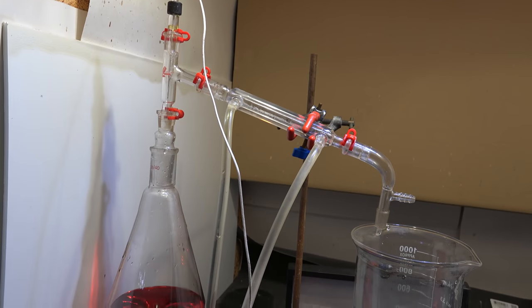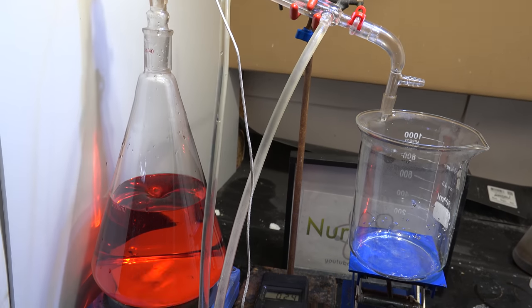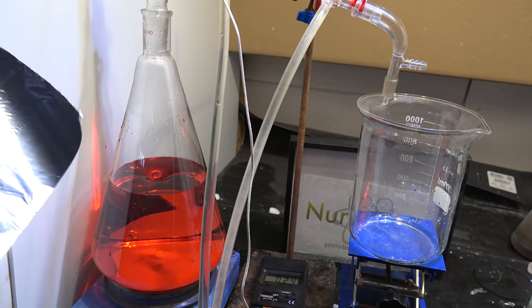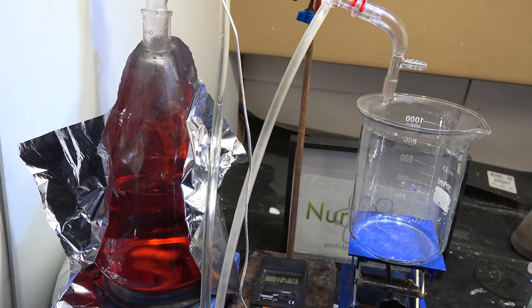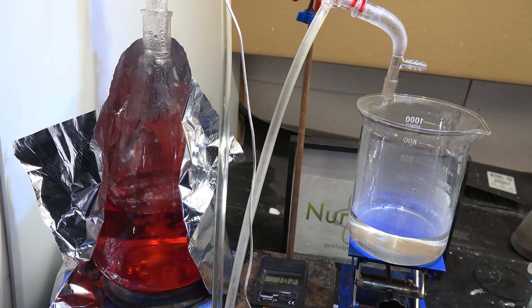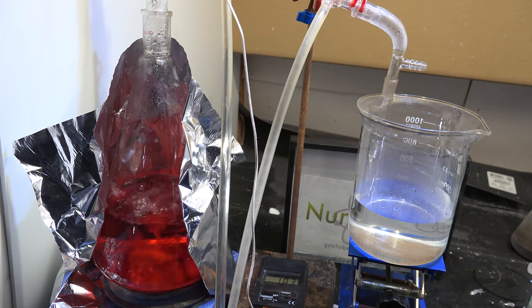Now we need to purify our propylene glycol. So we set up a simple distillation apparatus. I'm going to put on this foil shroud to keep the heat in. Now we just turn on the heating and start distilling. My antifreeze was pre-mixed with water so that's going to distill off first.